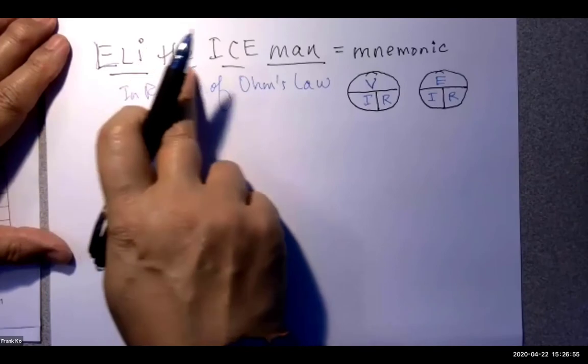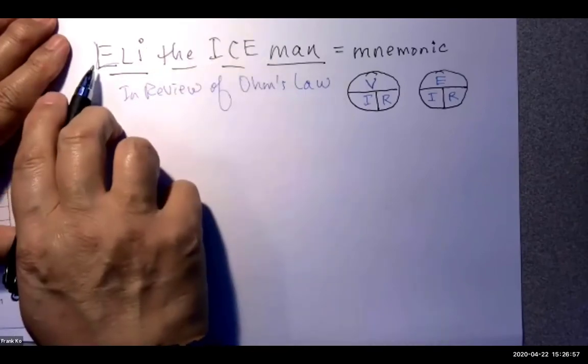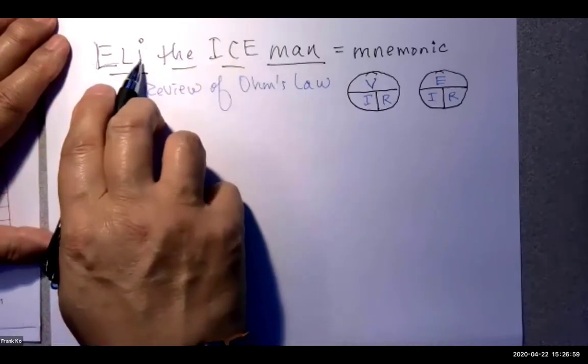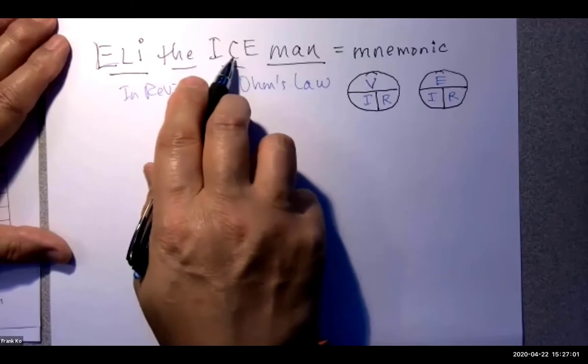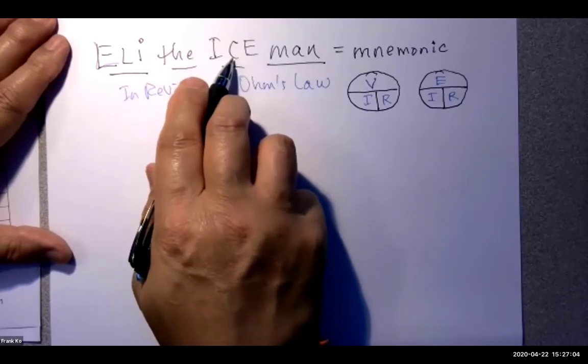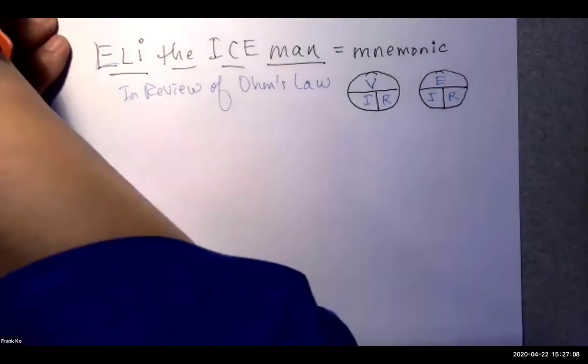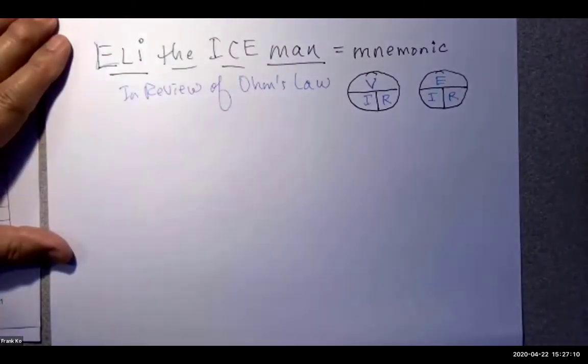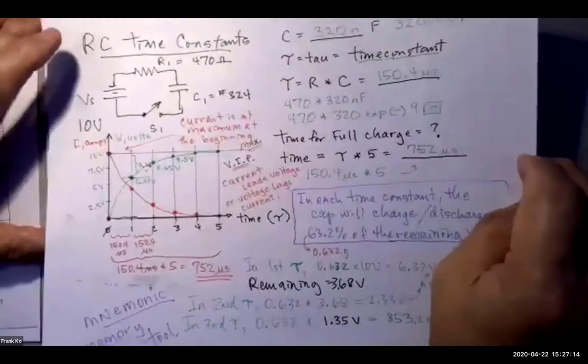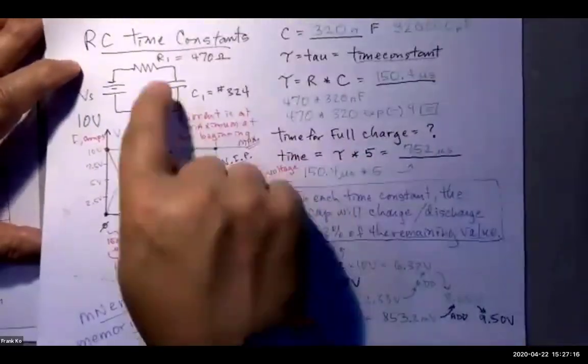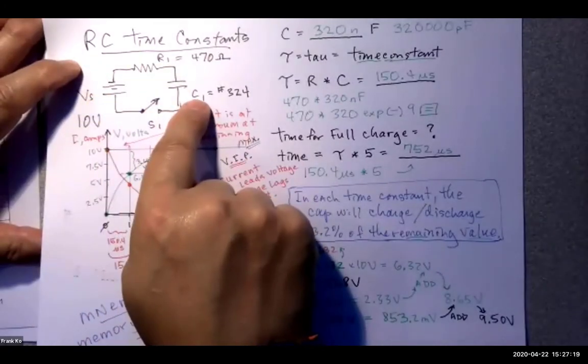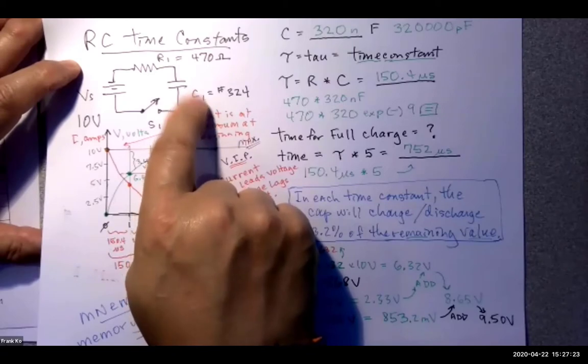So that being said, the mnemonic of Eli the Iceman, the E stands for voltage and the I stands for current. What do you think the C stands for? What do you think the L stands for? Here is a circuit that has an R, a voltage source, and a capacitor. What letter does capacitor start with? C.